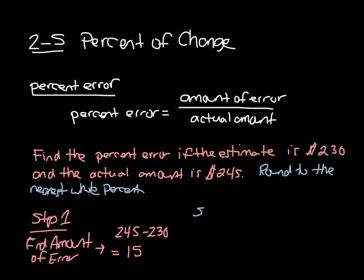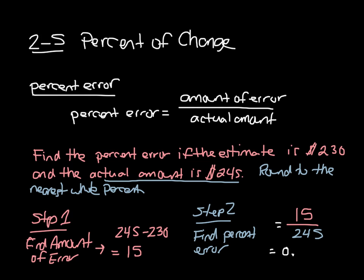Alright, next, step two, find percent error. Well, we'll use this formula up here, amount of error divided by the actual. And so our amount of error, 15, over our actual amount, and it says it in the question, $245. And when we divide 15 divided by 245, we get the decimal 0.061. Well, getting this into a percent, it's 6.1%, but we're looking for just a whole percentage, so we'll say the error is 6%.